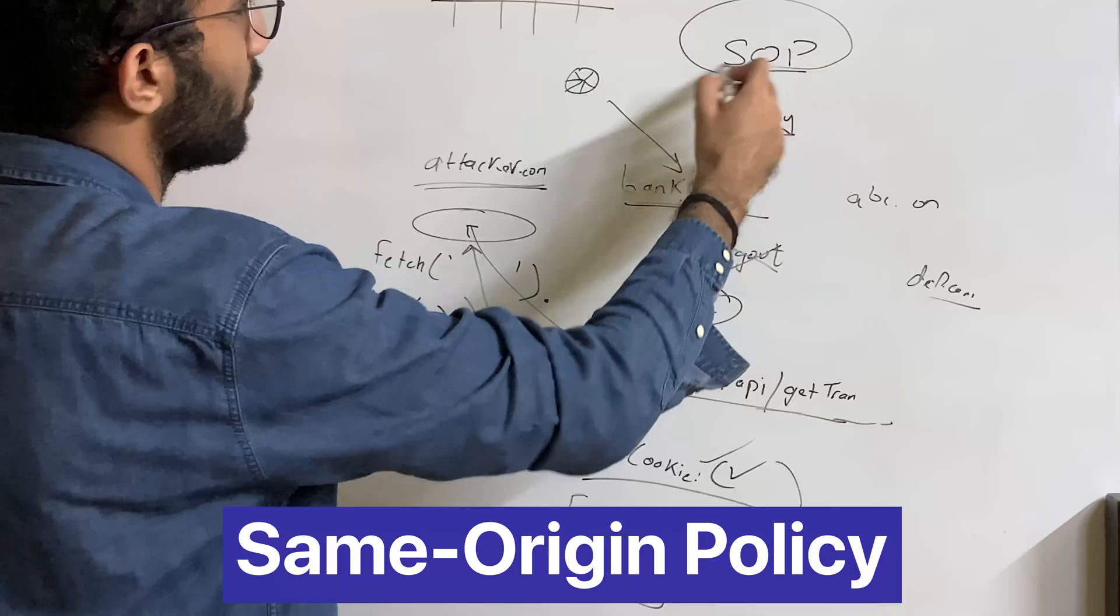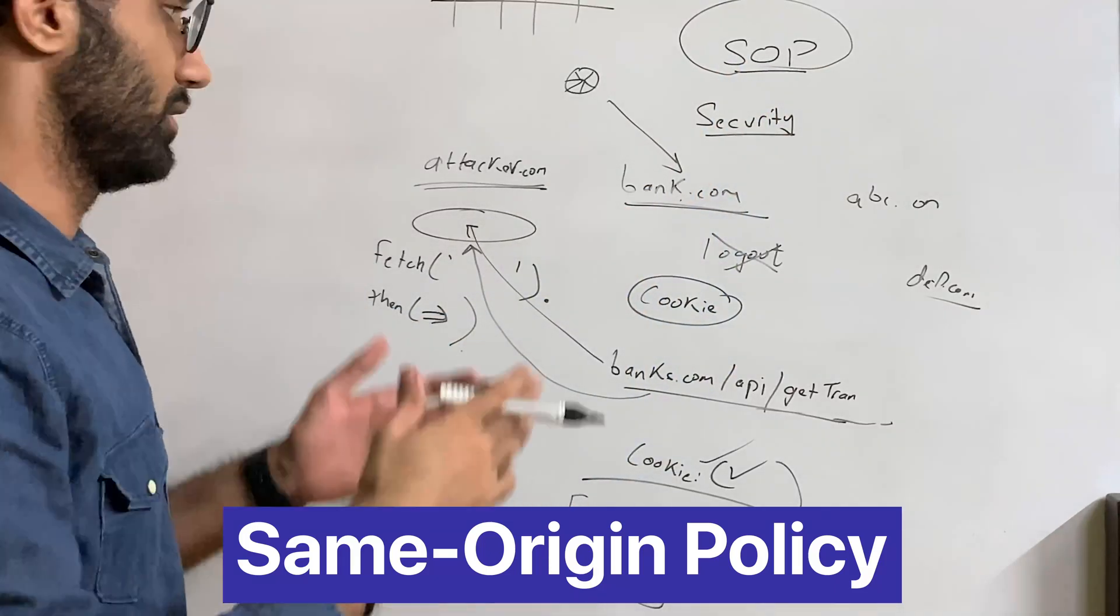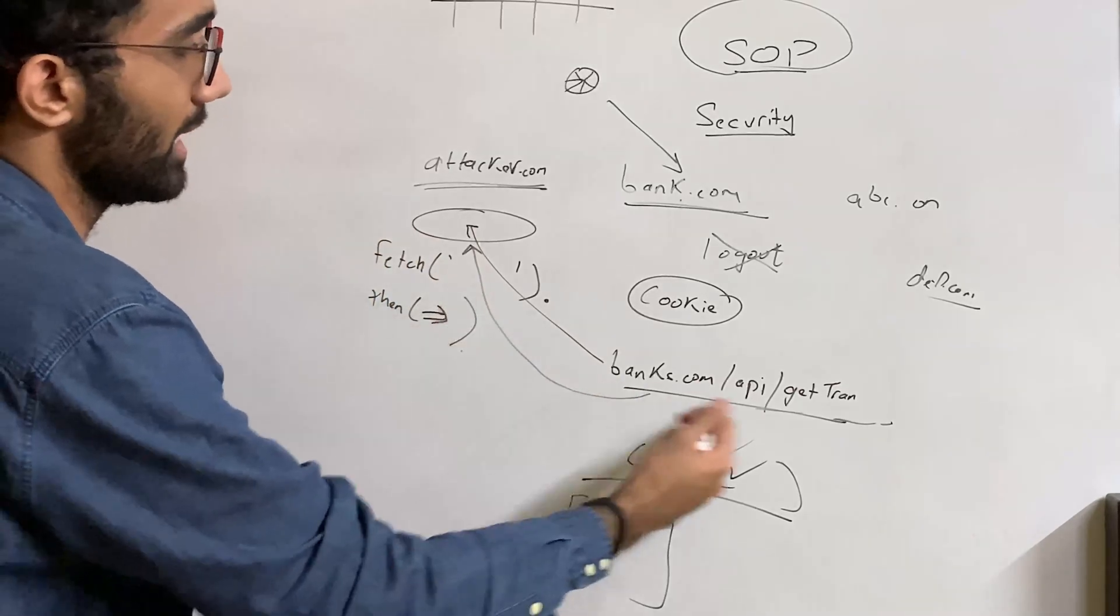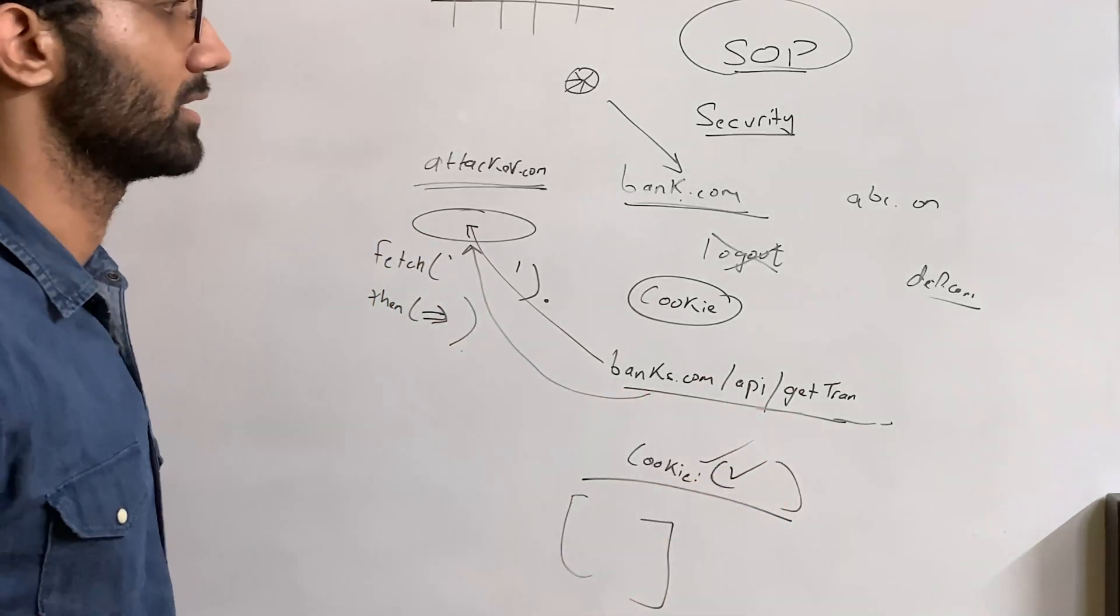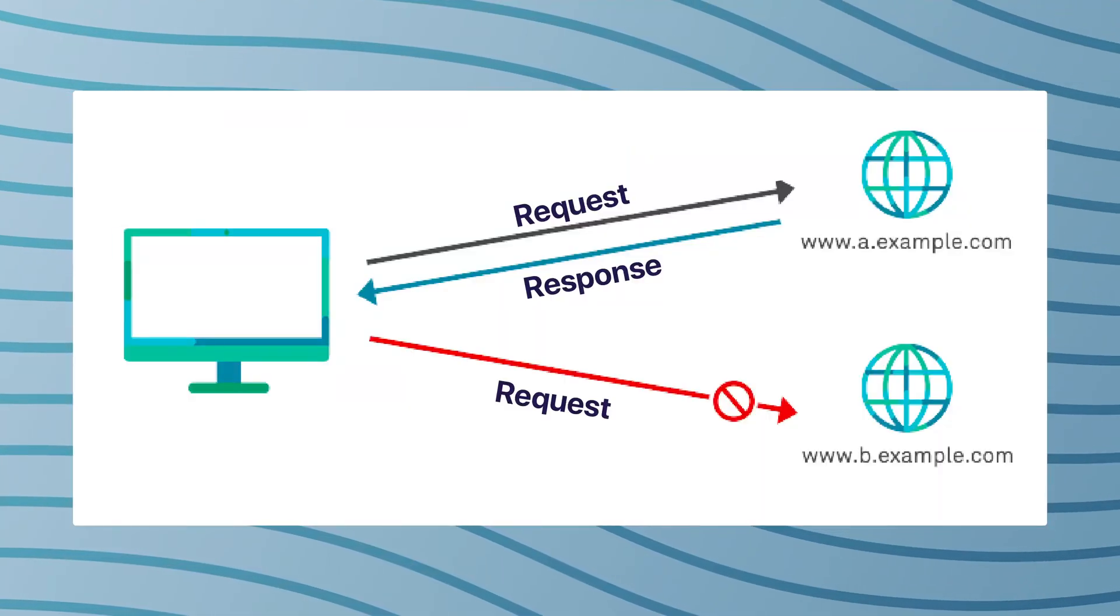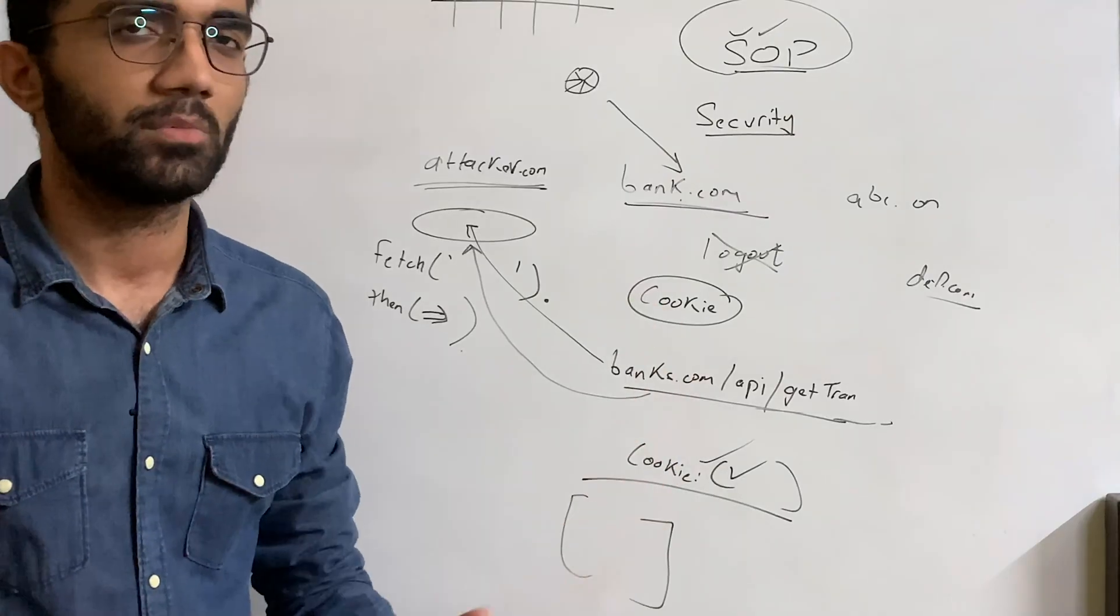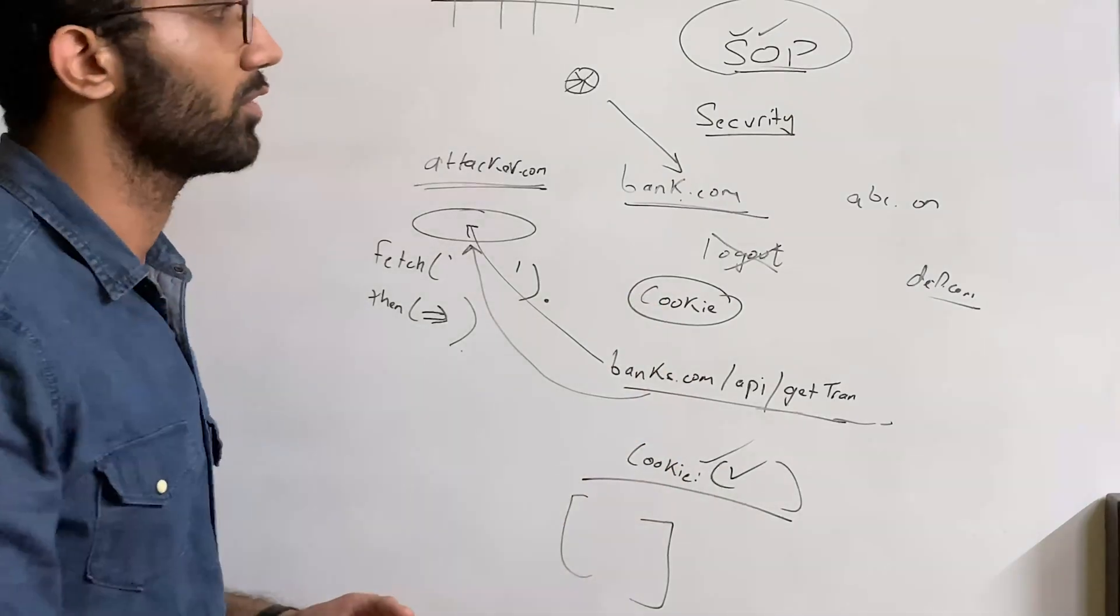What browsers did is browsers implemented a policy known as same origin policy, which restricts access of certain functionalities of the browser, one of which is API calling—an XHR request or a fetch request—to only the origins which have same origin.